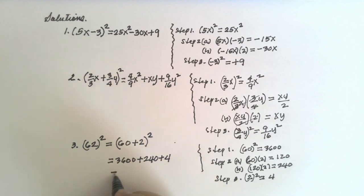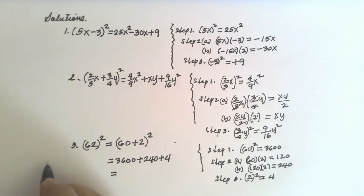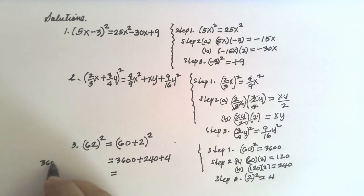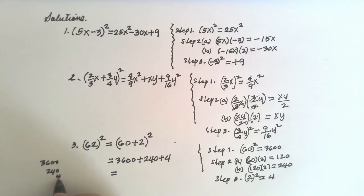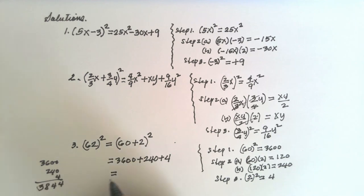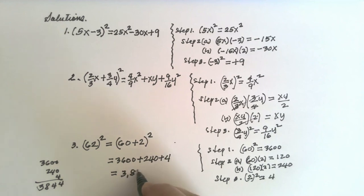Now add them together: 3,600 plus 240 plus 4. Adding these gives 3,844.